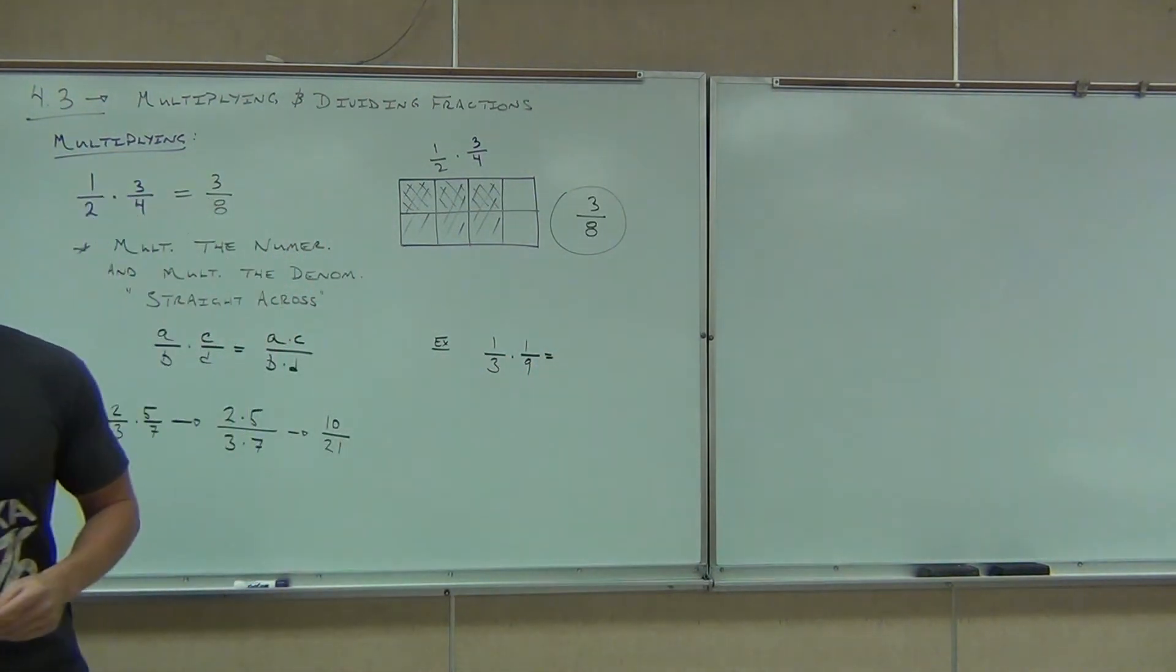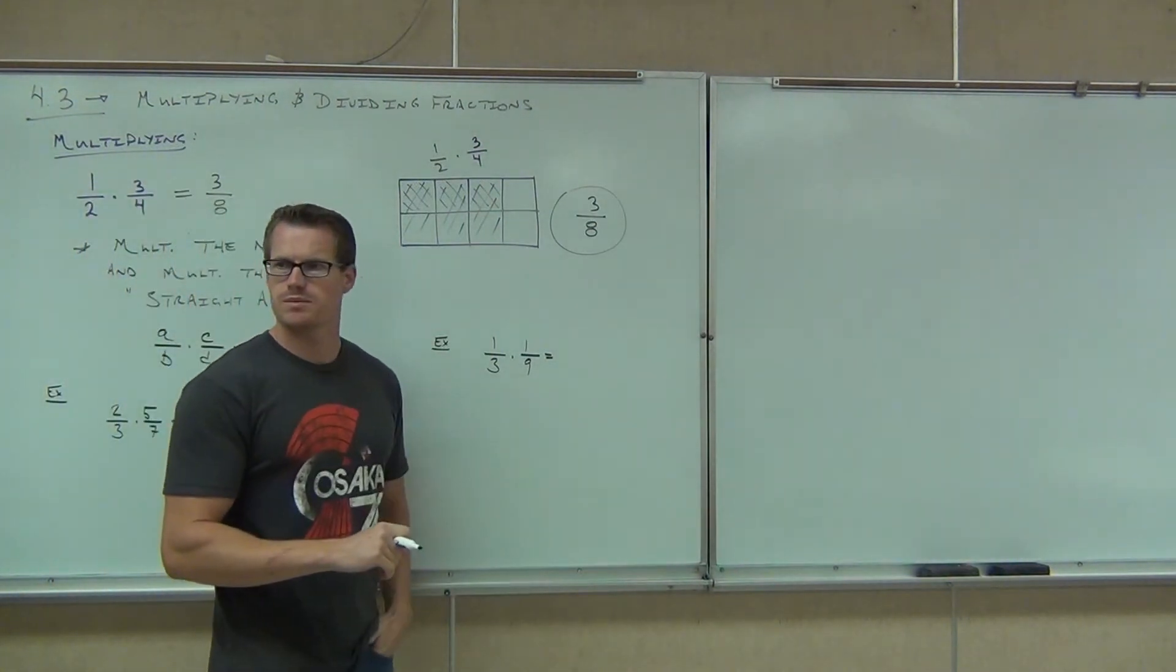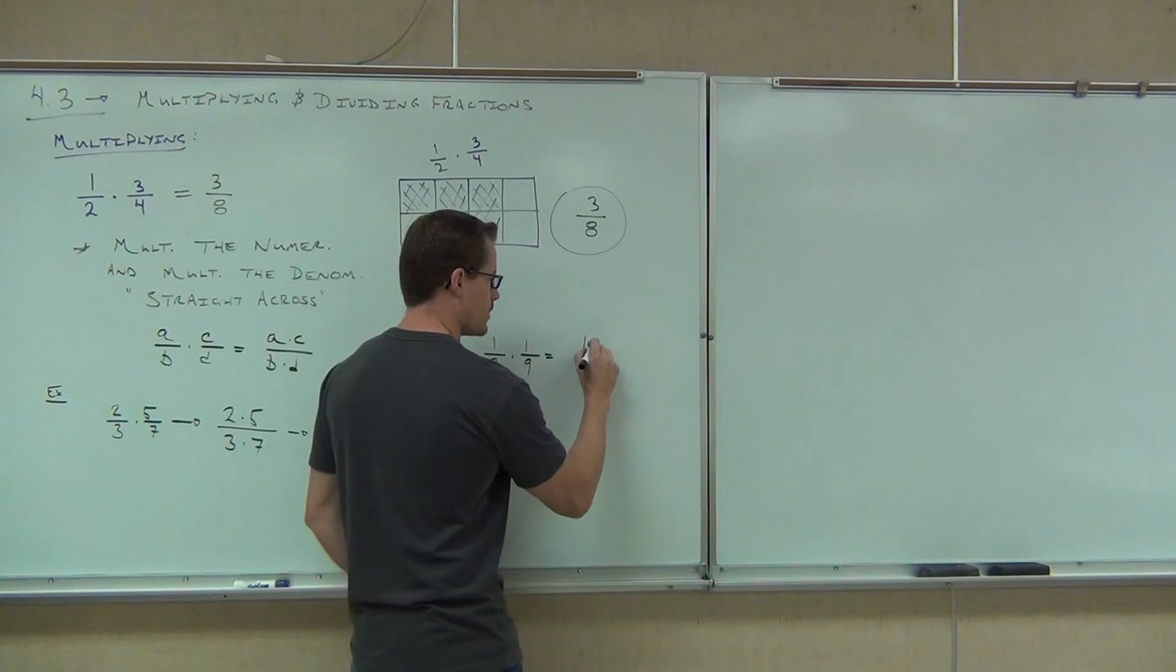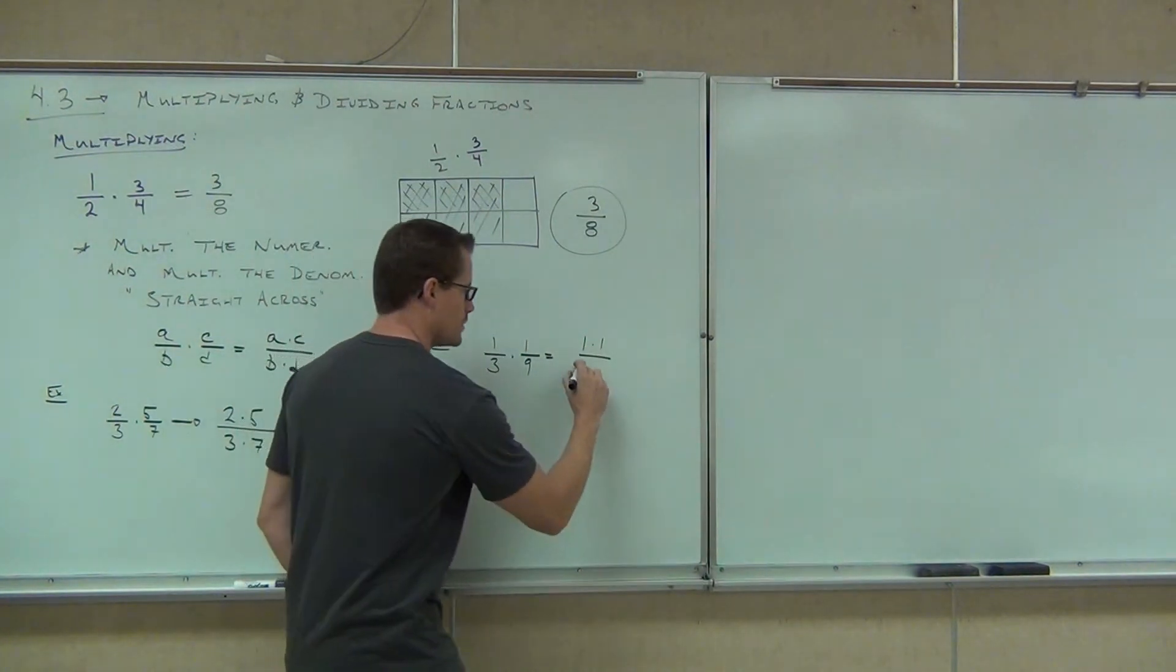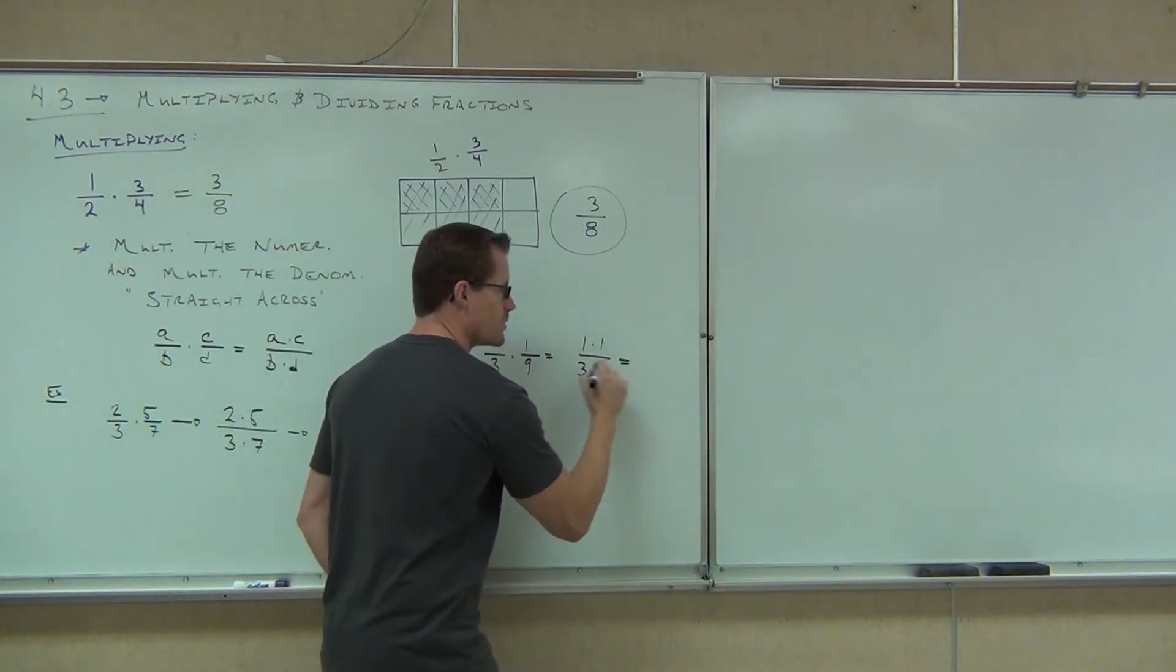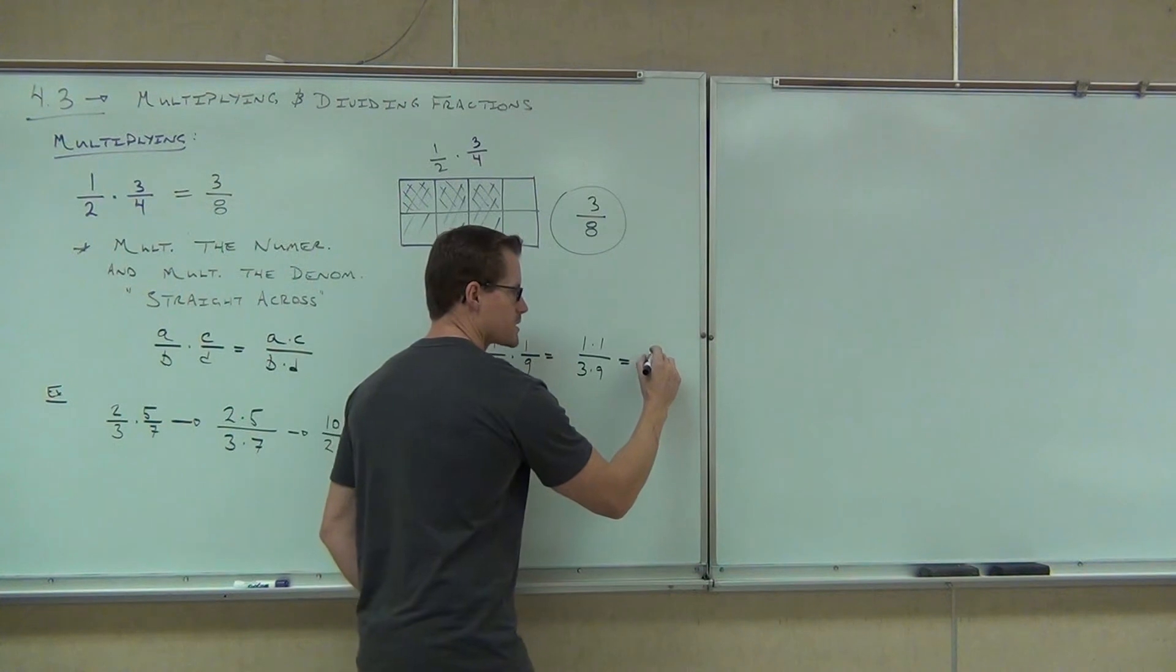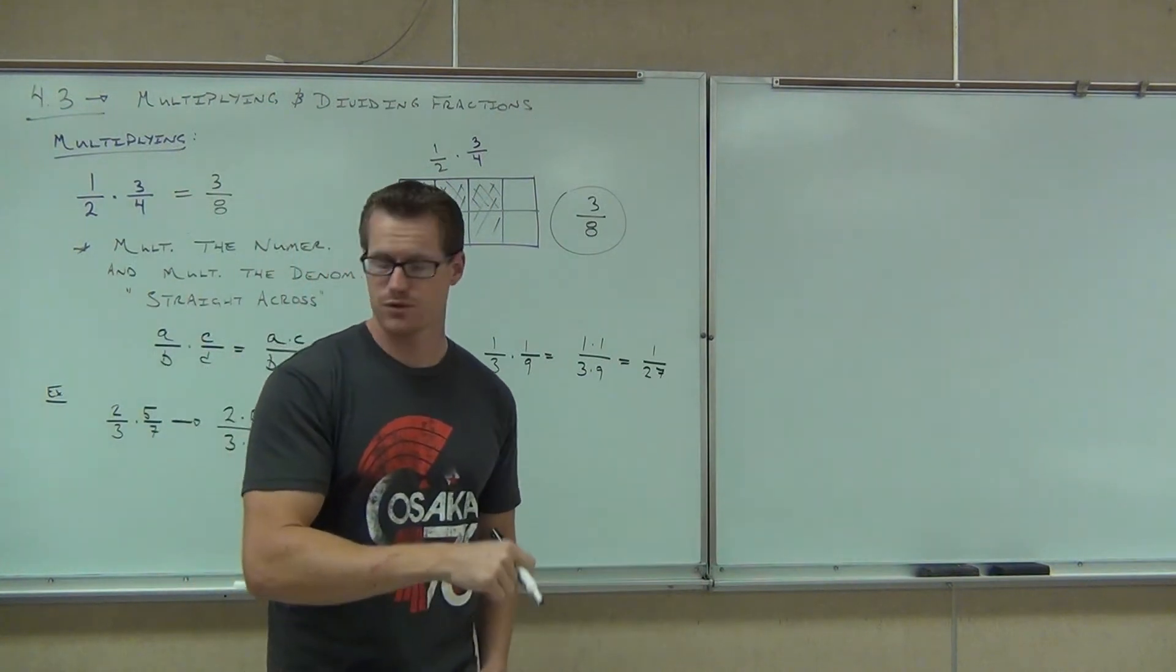How about 1/3 times 1/9? What are the things we're multiplying here? One. One times? One. So, I'm going to write that. One times one. Over what now? Three times nine. All right. So, we do our numerator times our numerator, denominator times our denominator. Then, we do that multiplication, and we're going to get what? One over twenty-seven. Perfect. Exactly right. Do you feel okay with our multiplication of fractions so far? Yeah. So far. Good.